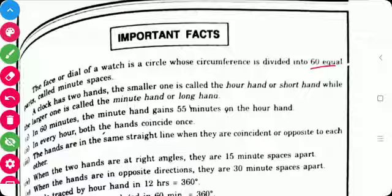A clock has two hands. The smaller one is called the hour hand or short hand, while the larger one is called the minute hand or long hand. In 60 minutes, the minute hand gains 55 minutes on the hour hand. In every hour, both the hands coincide once.